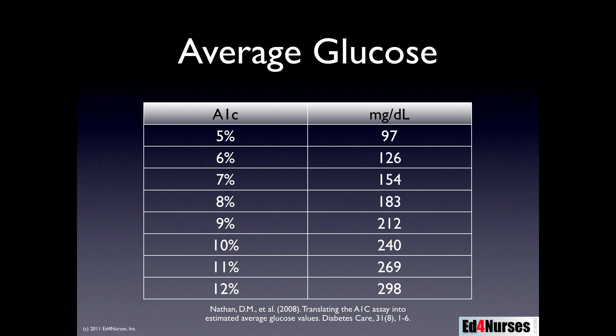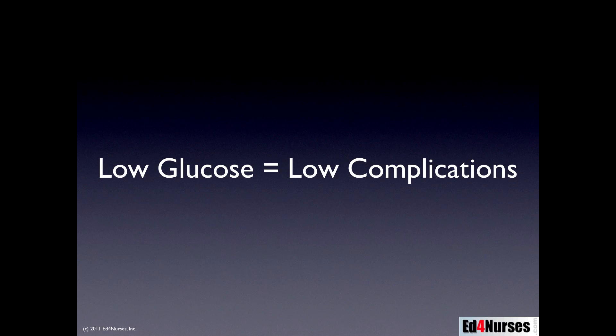It has been widely recognized that having a low blood glucose is associated with low complications in patients. We originally studied this in surgical intensive care patients and then applied it to every patient, saying everyone should have their blood glucose maintained within a normal range of 70 to 110. However, that's not always going to be the case — in some patients, having a low blood glucose level will actually cause more complications.